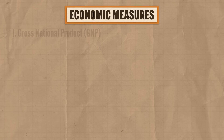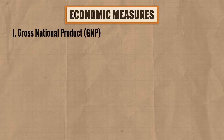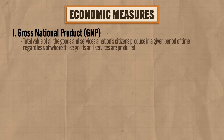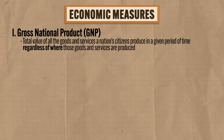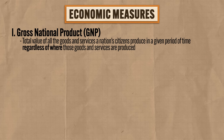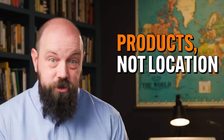First is the country's gross national product, otherwise known as GNP, and this measures the total value of all the goods and services a nation's citizens produce in a given period of time regardless of where those goods and services are produced. GNP is an economic measure of products created by citizens and companies of a particular country — the emphasis is on the products, not the location.